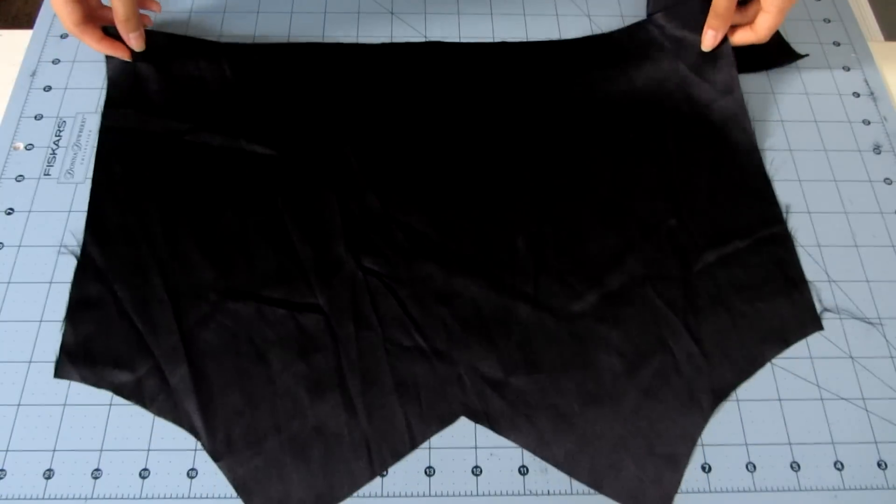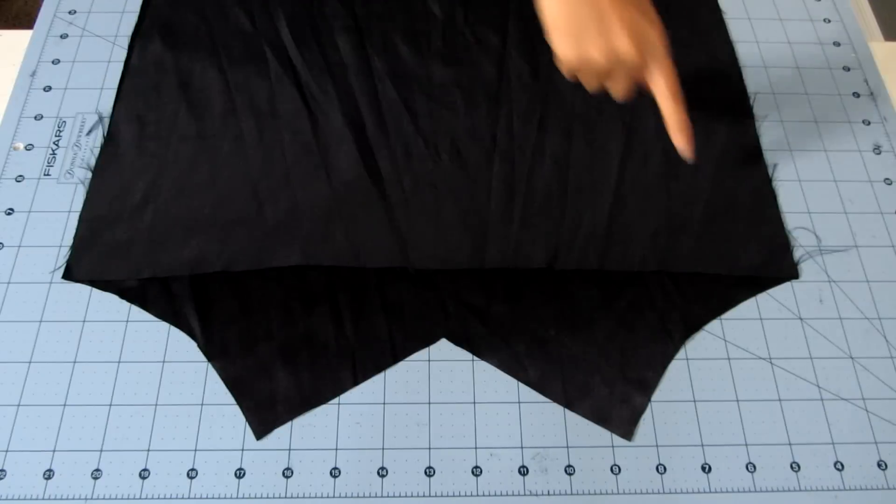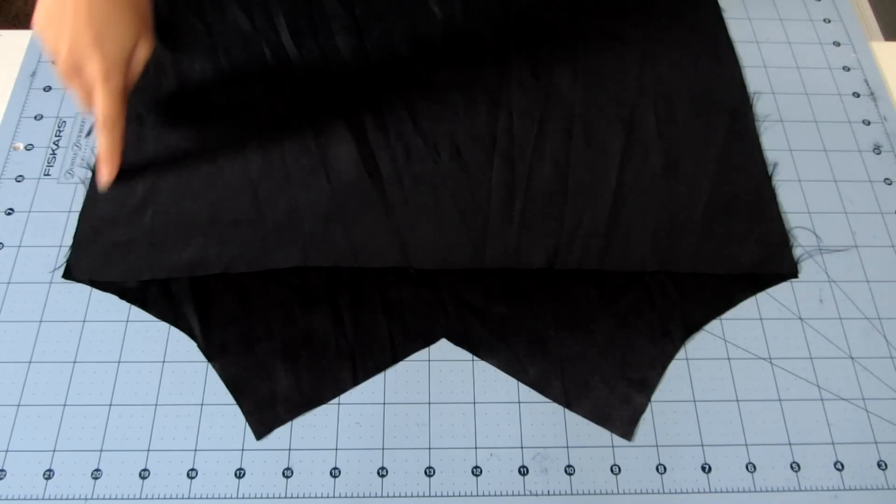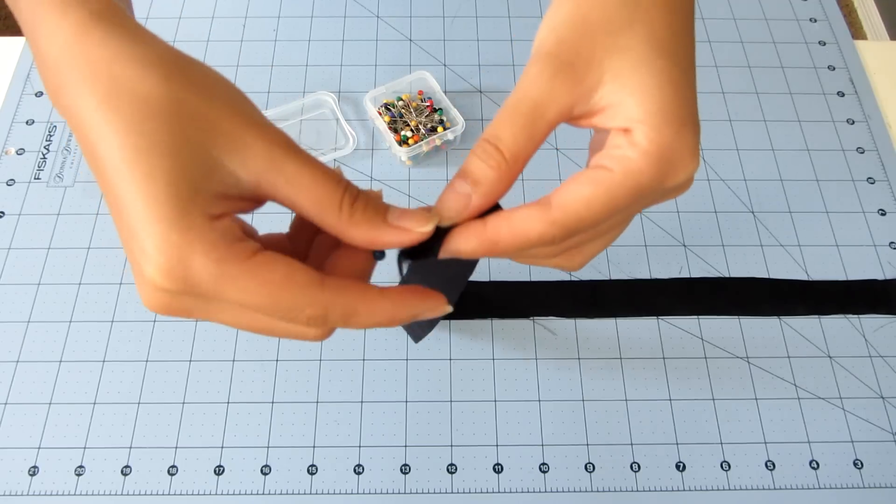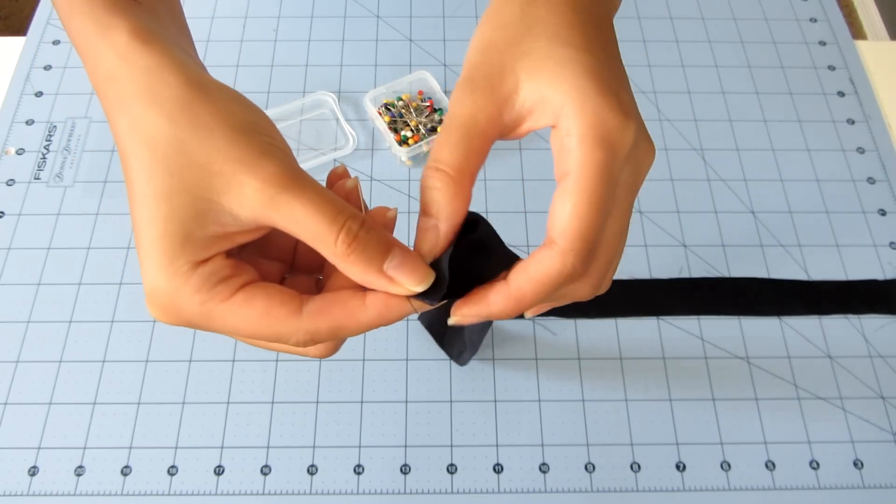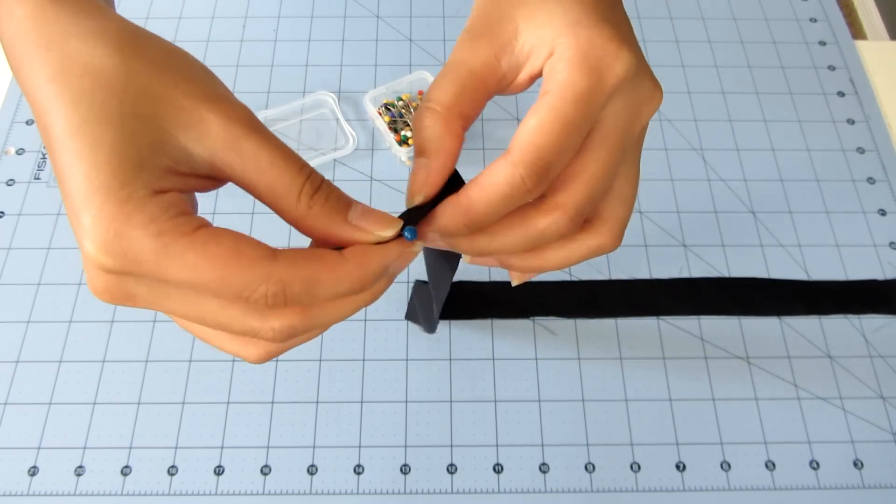After that, I placed them right sides together and sewed down the sides using a straight stitch. For the straps, I cut out a strip that's one inch wide and I recommend just making a really long piece and then cutting it down to size.